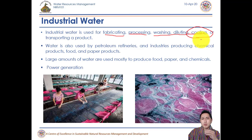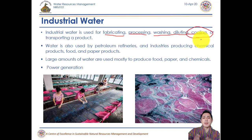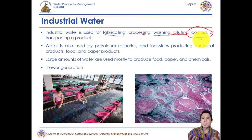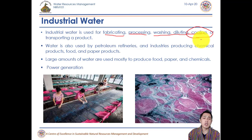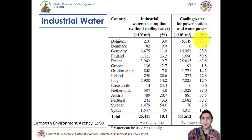A major example of industrial water use for cooling is in huge industries like power generation. Turbines are continuously rotating and getting heated up, so those machines must be cooled down with water continuously — like hydropower turbines. This requires huge amounts of water.